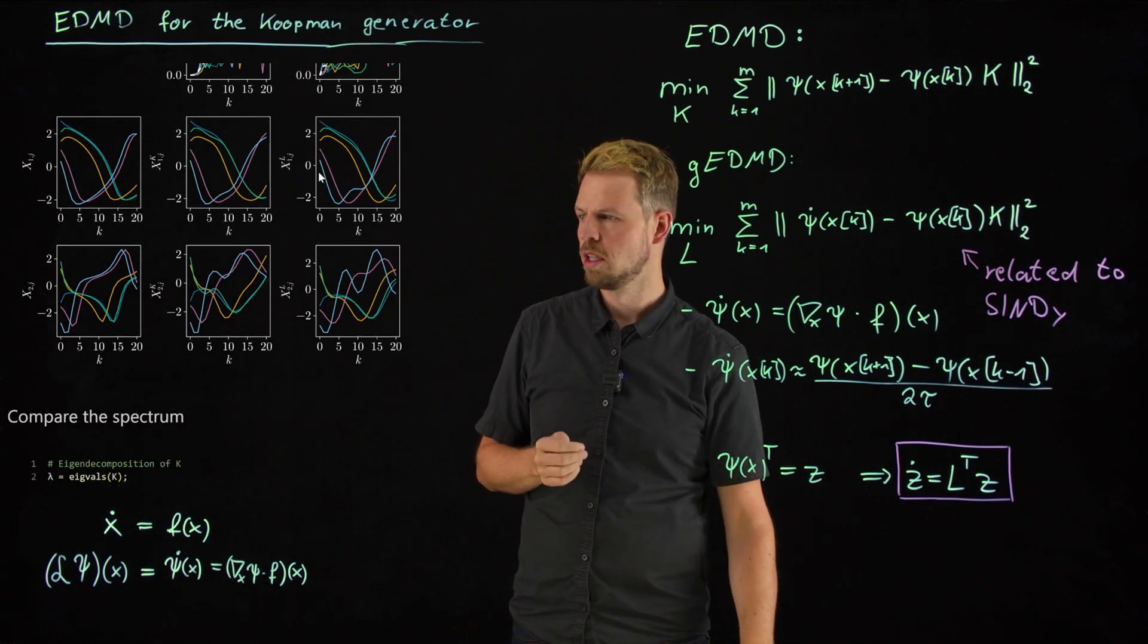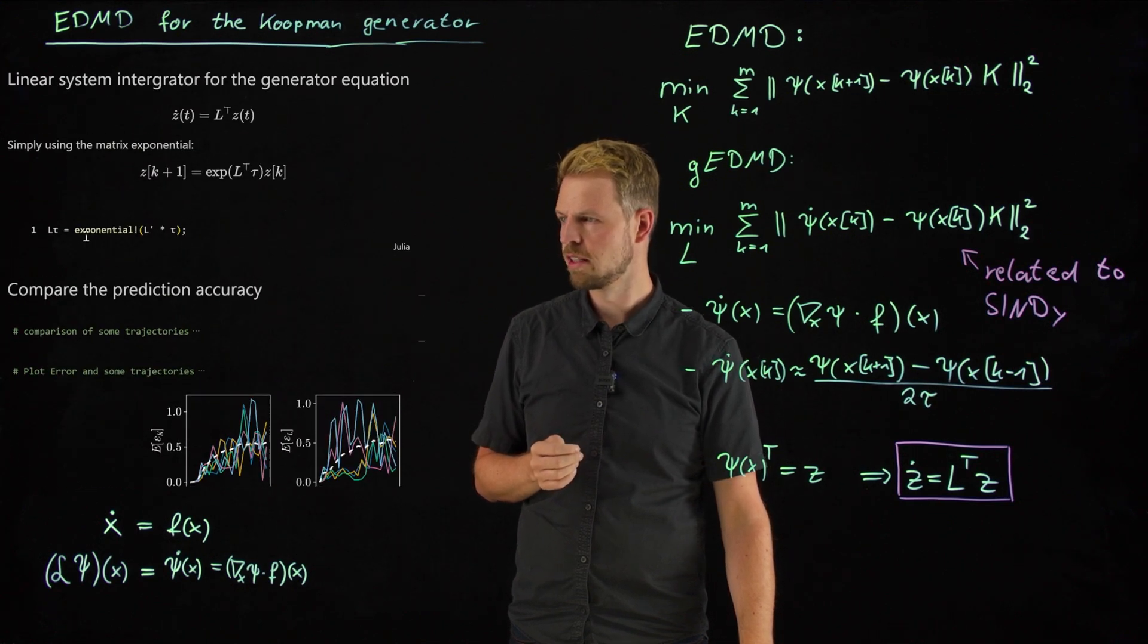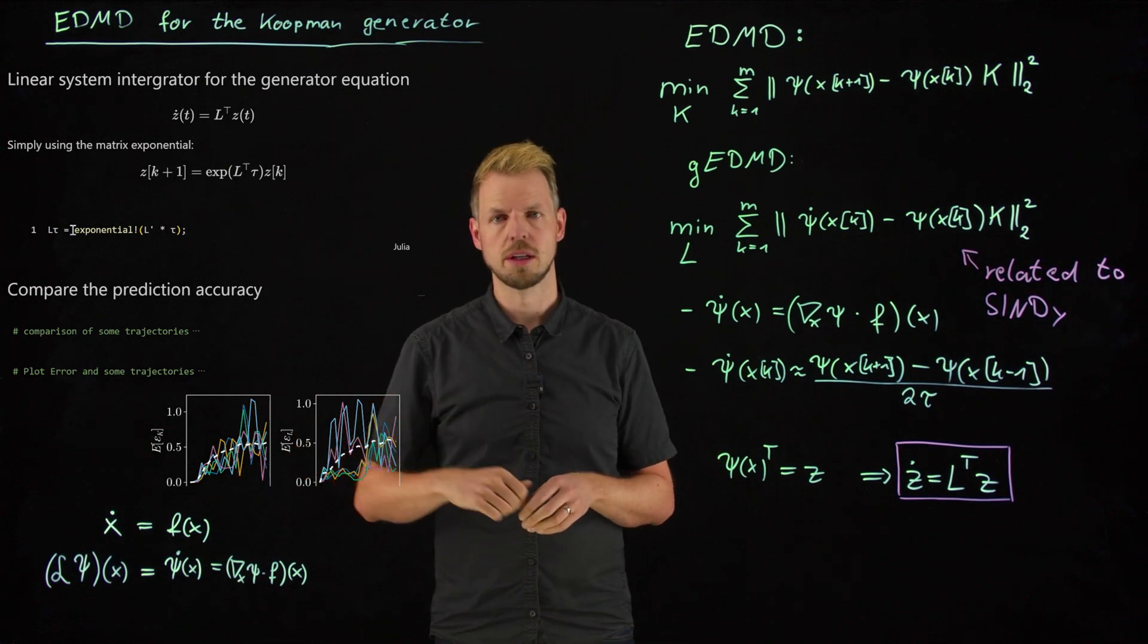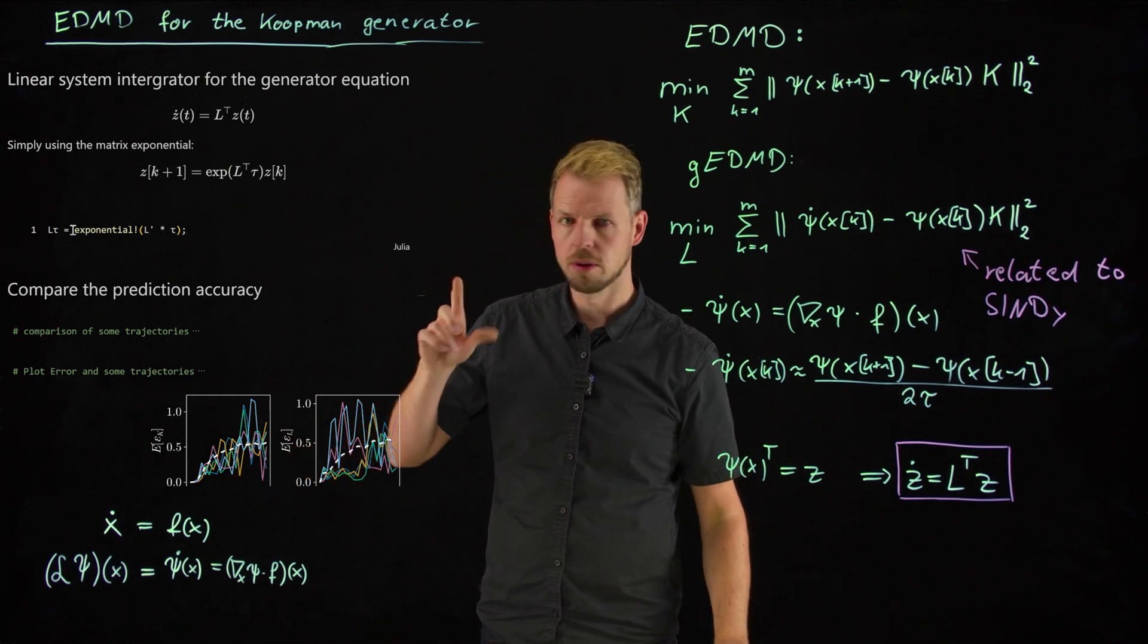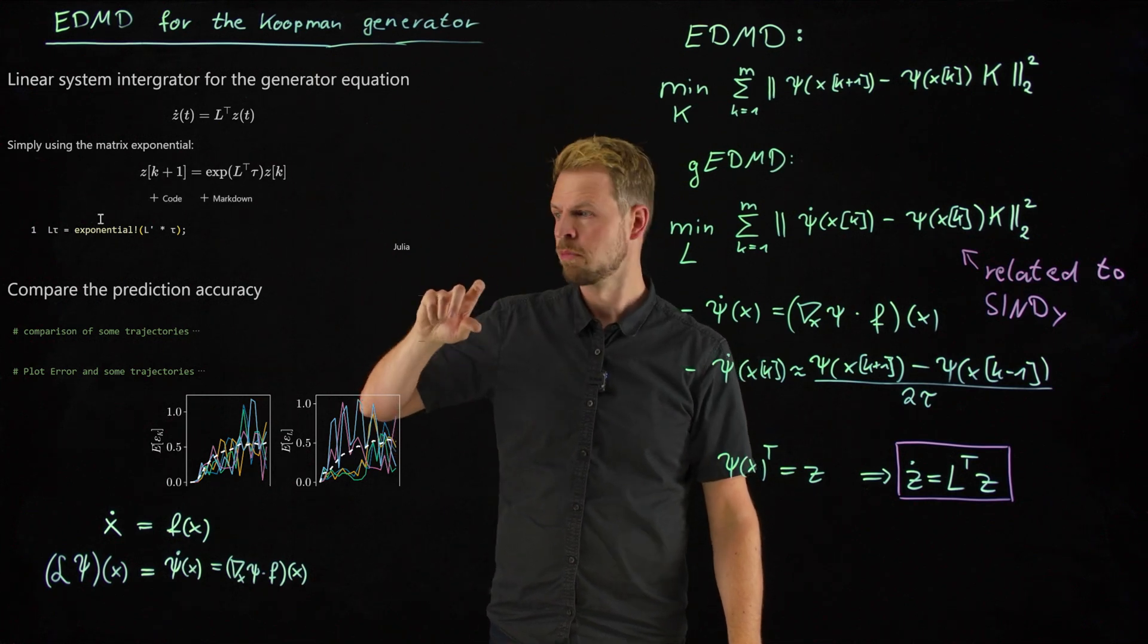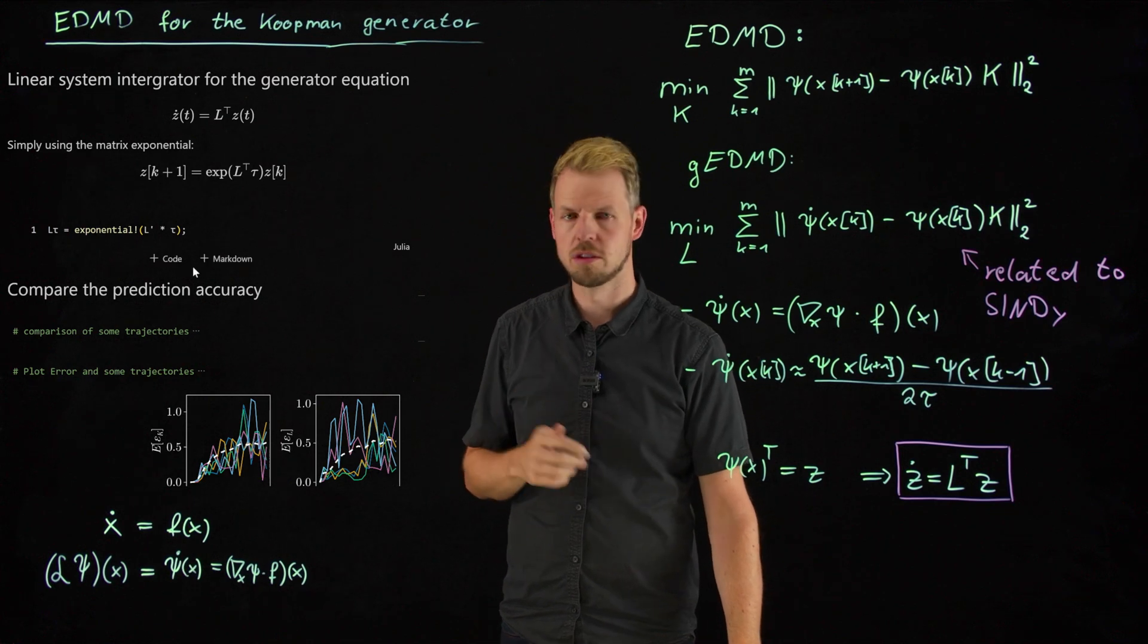But this is what we get. So you can use the generator. And now we have the advantage that I cannot only find this L tau, but I can find all the k taus. I simply exchange the tau and I can get arbitrary time stepping. So this is a bit more versatile.